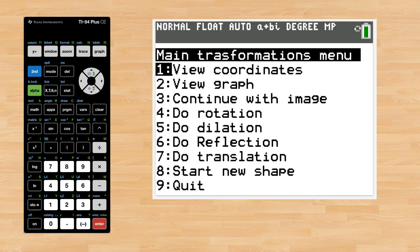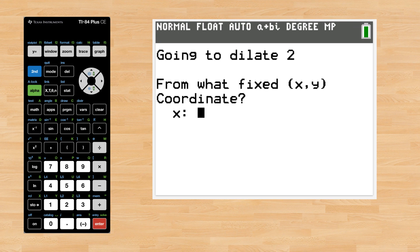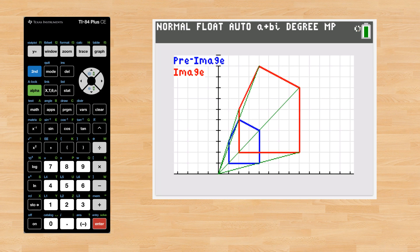Moving on to dilations, choose option 5 from the main menu. A dilation greater than 1 will enlarge an image. Let's try 2. And a center of dilation can be specified. The graph of the transformation shows the intersection of vertices with the center of dilation.